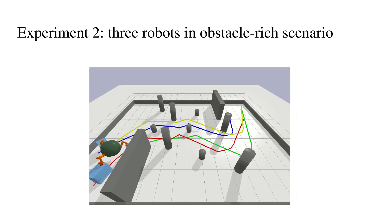In the second experiment, we evaluate our planner on a team of three mobile manipulators in an obstacle-rich scenario. Our simulations demonstrated that the proposed method can enable the team of mobile manipulators to change their base formation and arm configuration to pass through the complex environment.